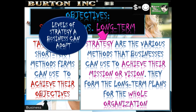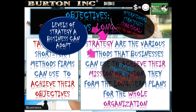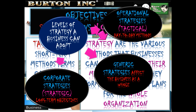Different levels of strategy a business can adopt. Operational or tactical strategies are the day-to-day methods used to improve the efficiency of an organization, generally aimed at achieving tactical objectives. For example, a restaurant may investigate how to reduce customer waiting time without compromising the quality of service. Generic strategies affect the business as a whole — we'll look at Michael Porter's generic strategies in more detail later — and this looks at ways a business can gain a competitive advantage to meet its short- or medium-term goals.